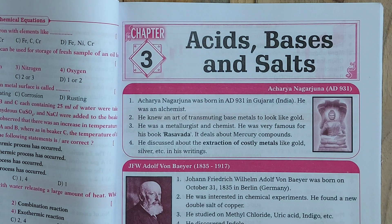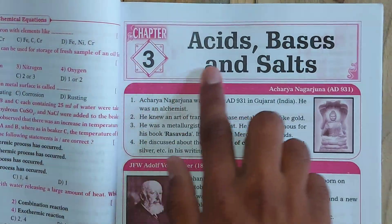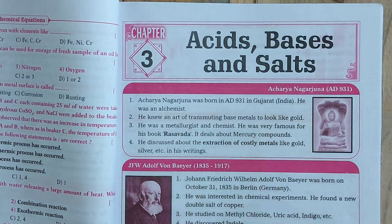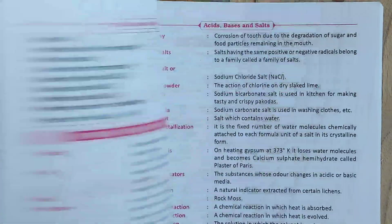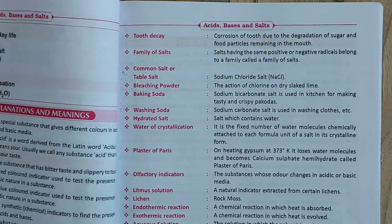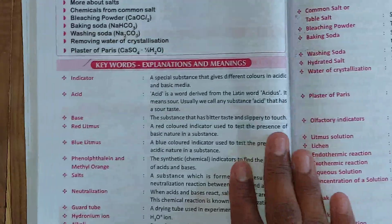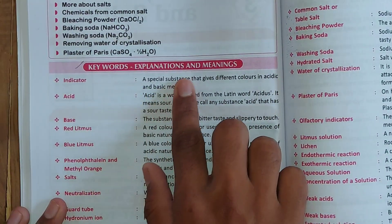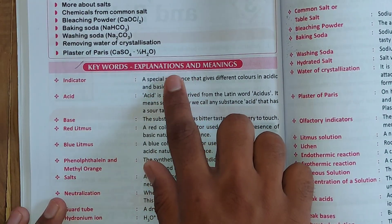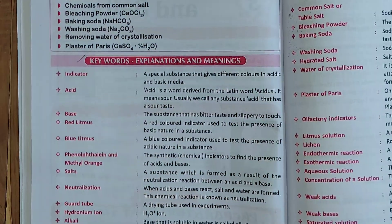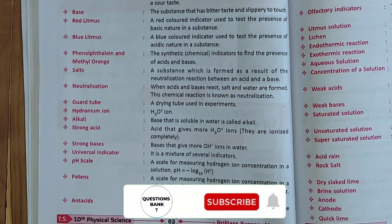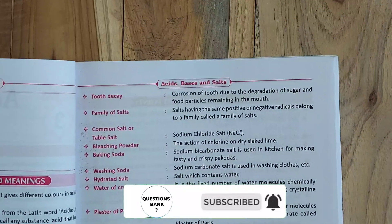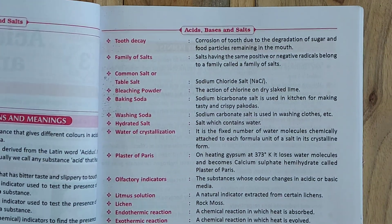Let's start this video. Chapter 3: Acid, Base and Salts. First we will see the keywords — keywords, explanations, and meanings. We will see all keywords, meanings, and explanations, and you can see here it's continuously moving to the next page also.